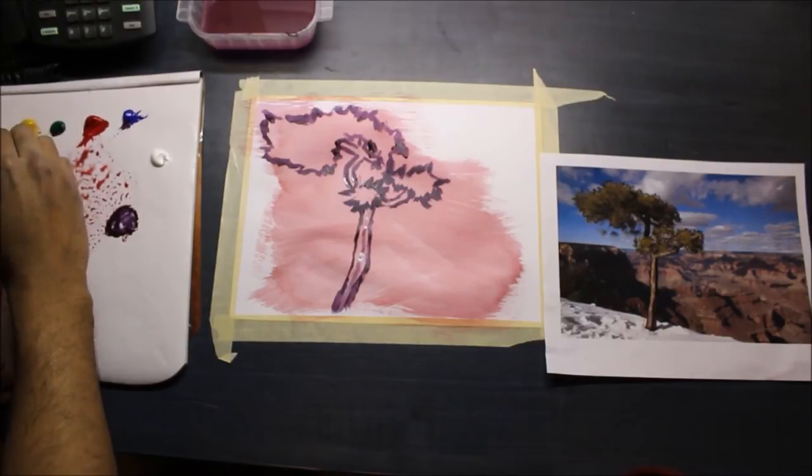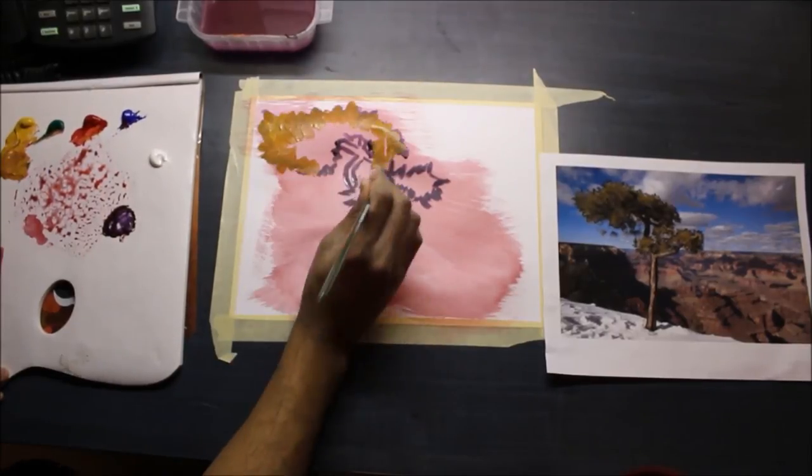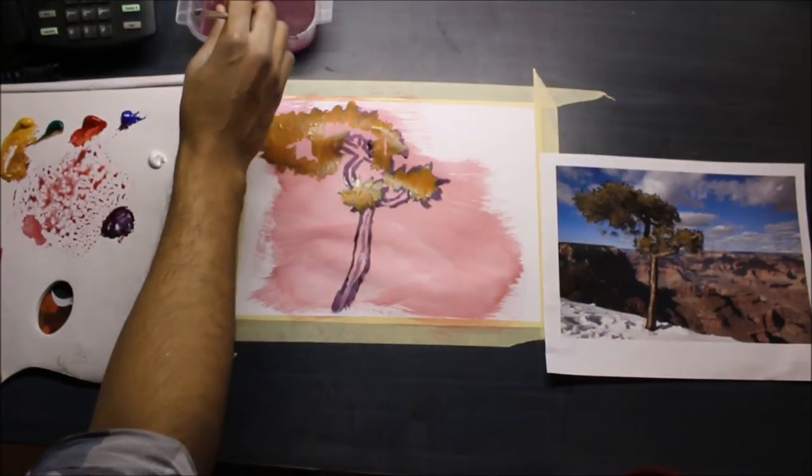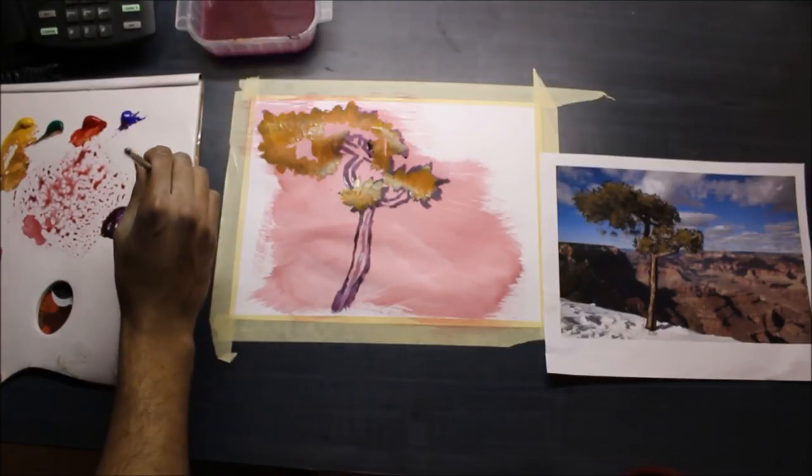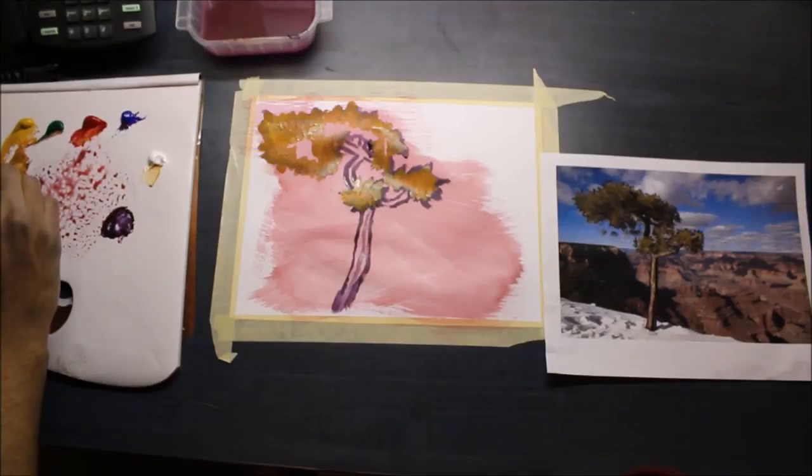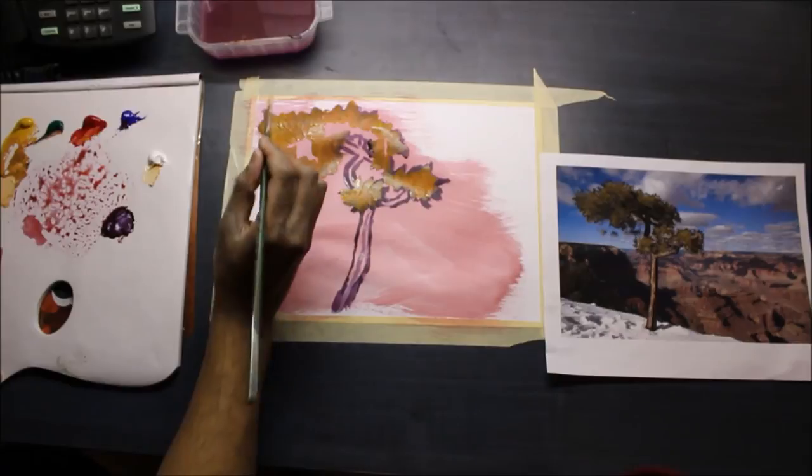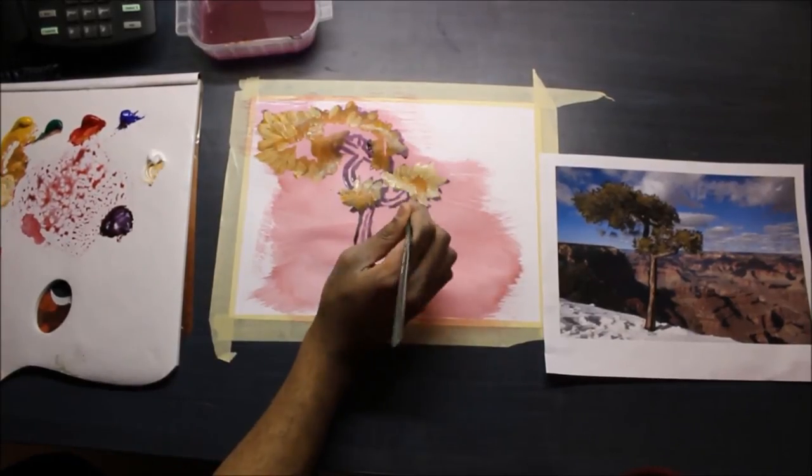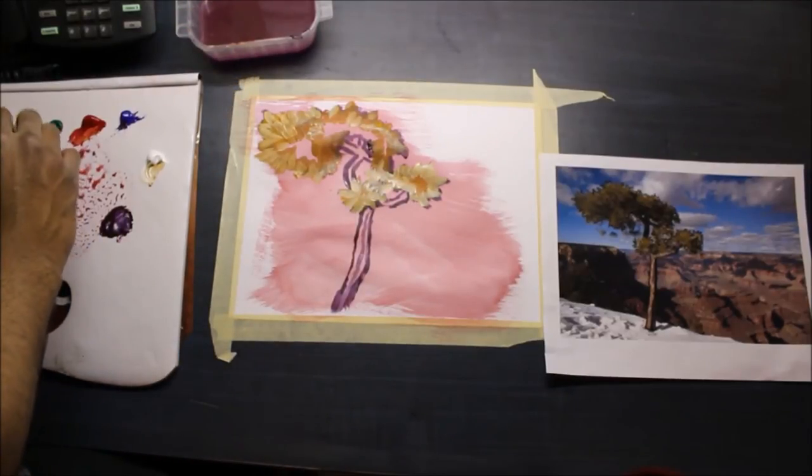Next thing I'm gonna do is add some highlights because we want to give a sense of lighting and direction. So I'm just gonna mix a little bit of white with the color we just made. The highlight color that I mixed is very similar - I'm just adding a little bit more green because I noticed that it's not quite green enough.